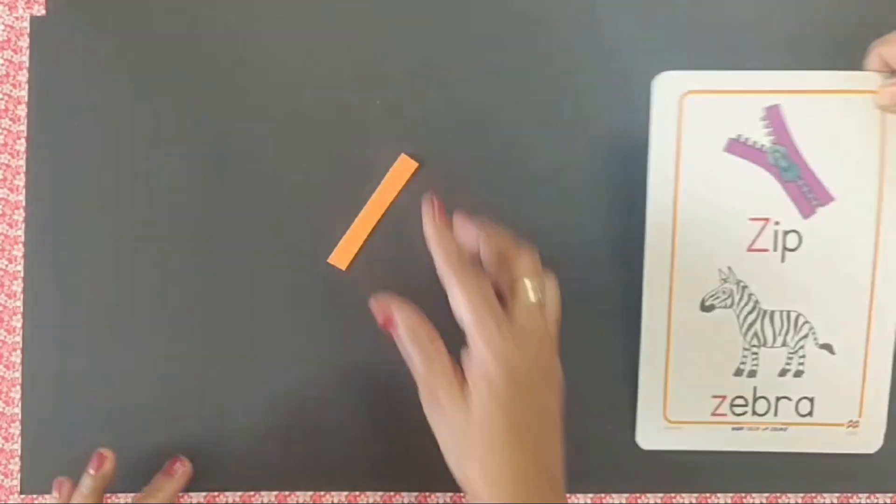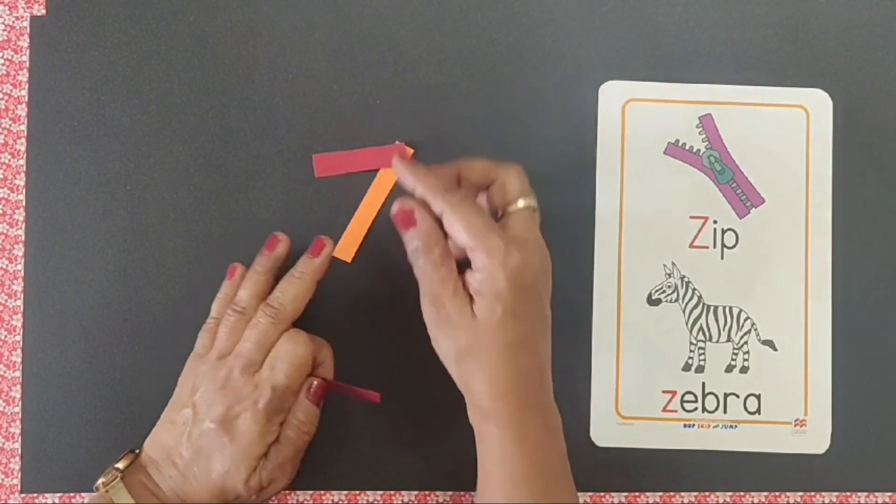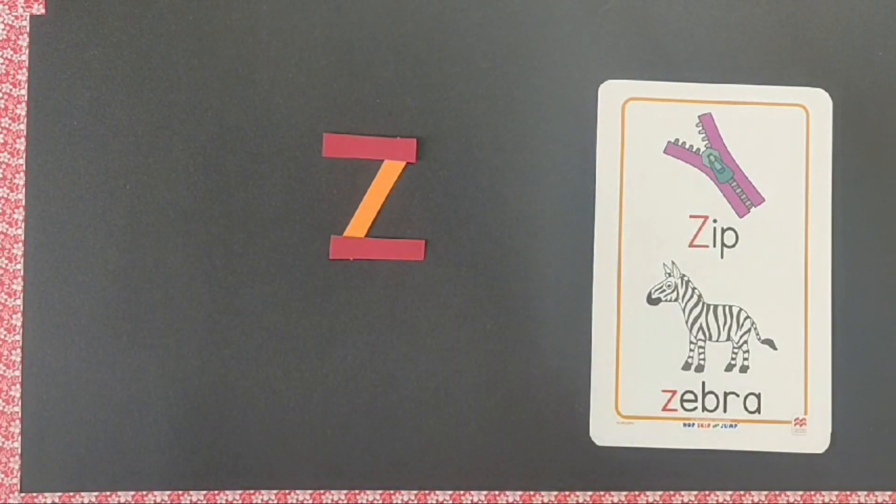Now a bigger strip, two smaller strips like this. Z. Say Z says zuh, Z for zip.